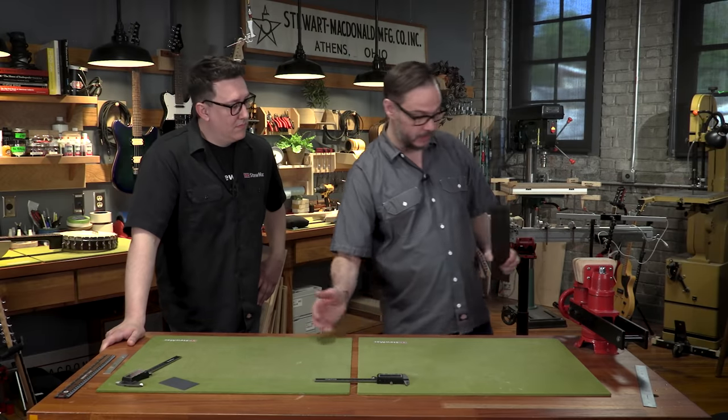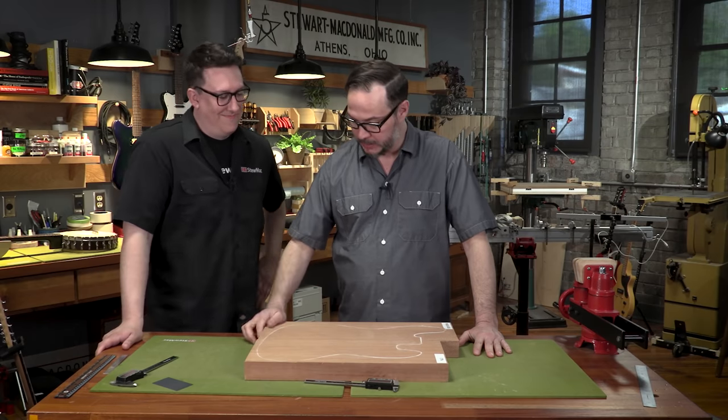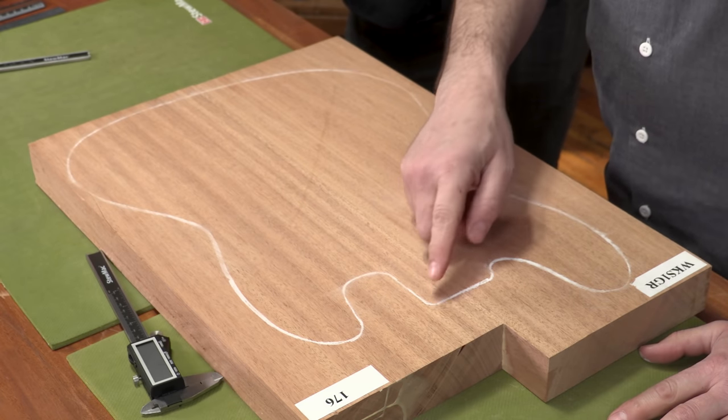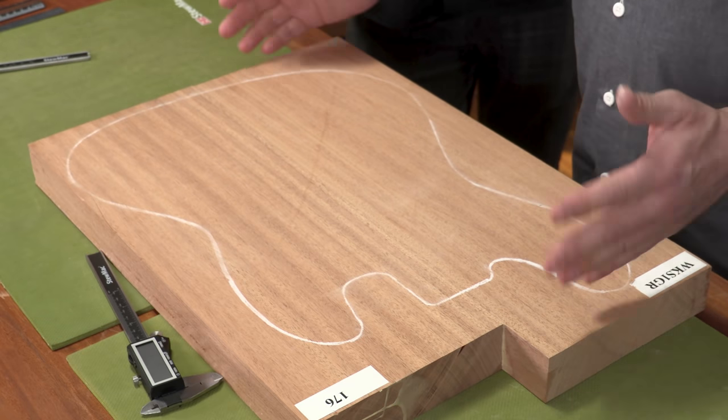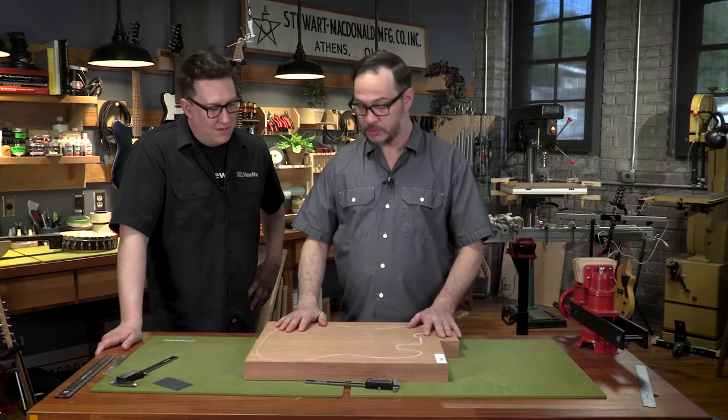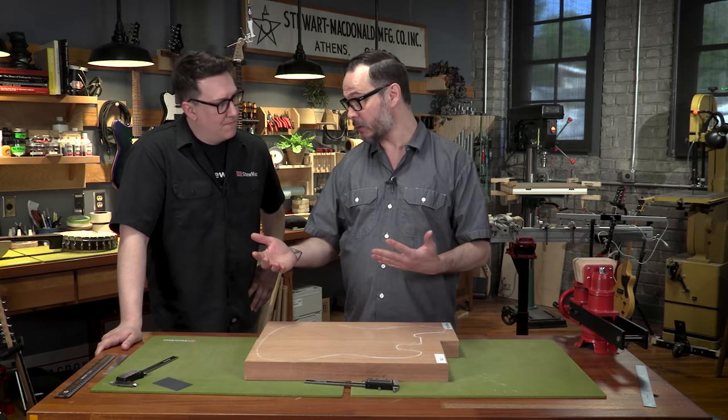If we were talking something on the other end of the spectrum, like say roughing out a body out of a blank. Now it doesn't matter if we're five thousandths away from this line, right? This is just roughing this out. We could be a quarter inch out, a half inch out, and it really doesn't make a huge difference because we're just roughing this out and we're going to shape this later. So tolerance is important to understand not only so we can be accurate, but so we don't drive ourselves crazy trying to be accurate when we don't need to be.